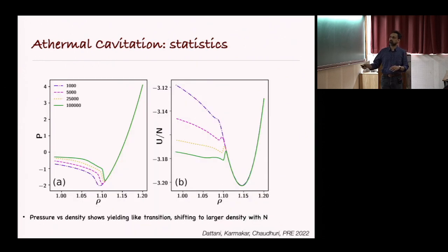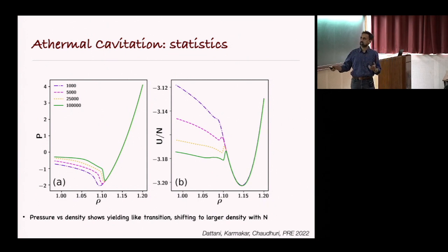What happens is that if you start off with a high-density glass, it has a positive pressure. Then as you expand, the pressure falls. Eventually it goes negative and becomes largely negative. Then suddenly, this pressure is released and the cavity is formed.